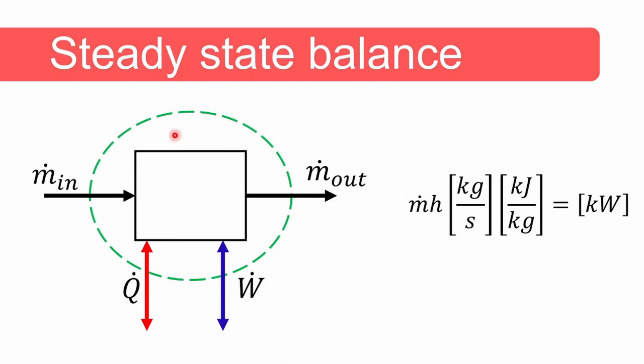Now let's look at this visually. The system boundary is given by the green dashed line. For steady state we know that the mass flow rate in is equal to the mass flow rate out of the system. We also know that energy flow rate in is equal to the energy flow rate out. Kinetic energy, potential energy and enthalpy are the forms of energy associated with the substance flowing across the system boundary, either into or out of the system. Note that when we multiply mass flow in kilograms per second with enthalpy in kilojoules per kilogram we get the resulting units of kilowatts.